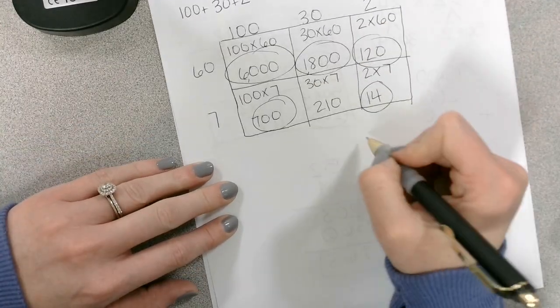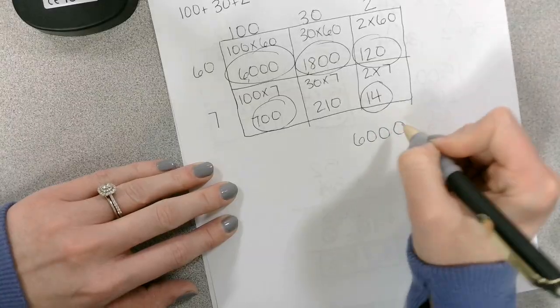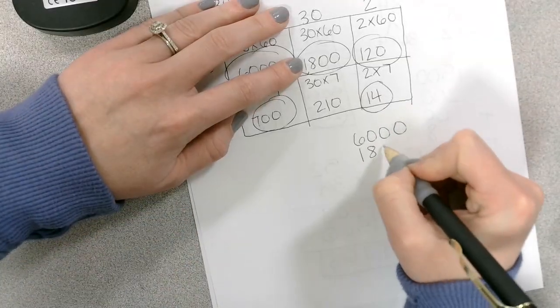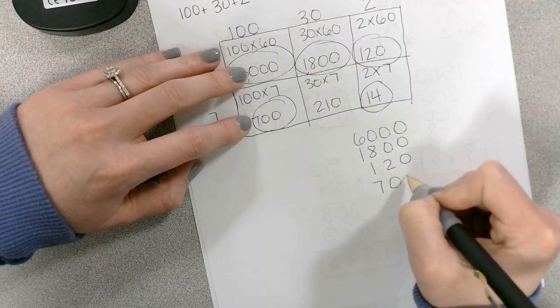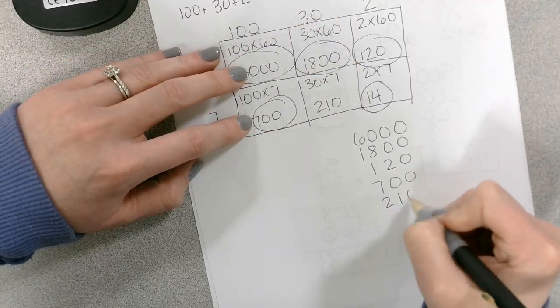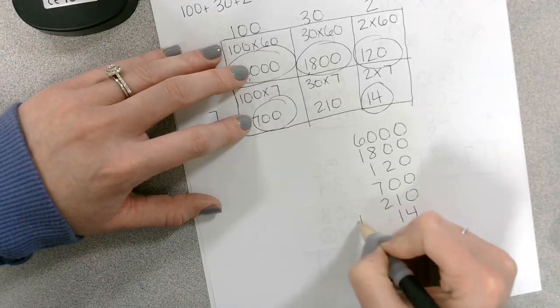So we just add them up. 6,000, 1,800, 120, 700, 210, and 14.